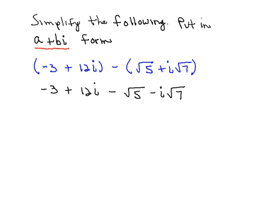Now what we would like to do next is combine together the terms that are real numbers, which would be the negative 3 and minus the square root of 5. And since that can't be simplified any further, we would simply write minus 3 minus the square root of 5 inside parentheses to represent the real portion of our answer.